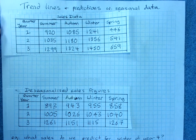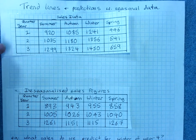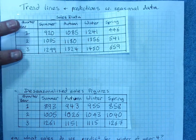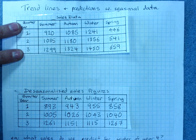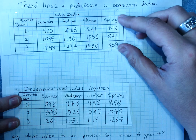Trend lines and making predictions with seasonal data. In the previous lesson on de-seasonalizing data, we took three years worth of sales data from a shop and we found the de-seasonalized data.